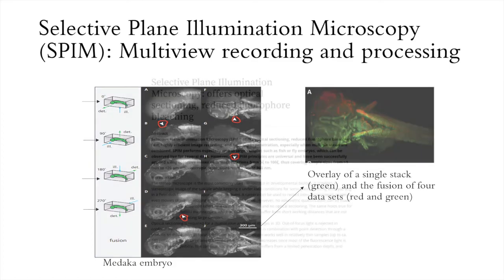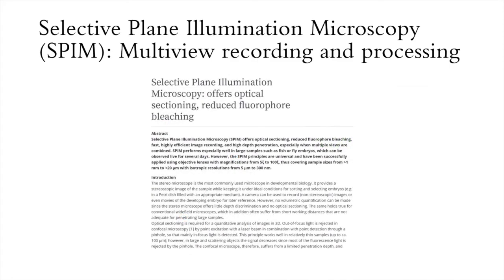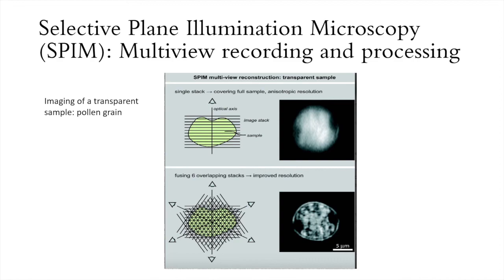In this other paper by Jan Huisken, where they were doing a live image of a transparent sample, we can see that the single dataset — the top image — suffers from poor resolution. Therefore, rotation of the sample and acquisition of multiple datasets with different overlap will provide overlapping data that multi-view reconstruction can combine to create isotropic resolution.